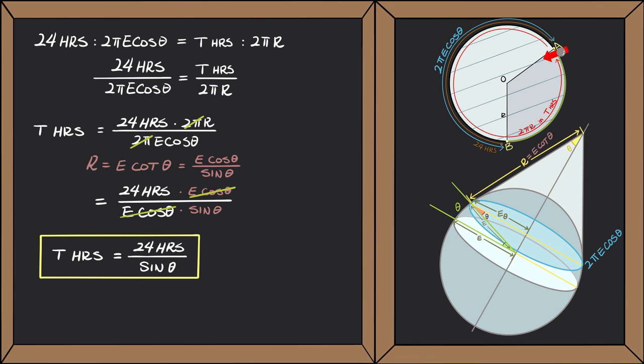For example, in Paris, France, which has a latitude of 49 degrees north, it takes 32 hours for a pendulum to make a complete turn.